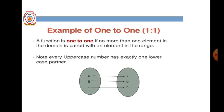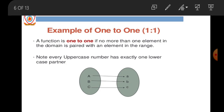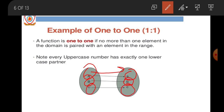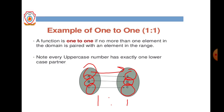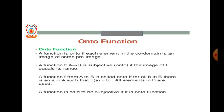Let us discuss them one by one. The first is the one-to-one function. As the name suggests, there is one mapping from one element to one element. For example, uppercase A maps to lowercase a, uppercase B maps to lowercase b, and uppercase C maps to lowercase c — so there is one-to-one mapping, that is why we call it a one-to-one function.